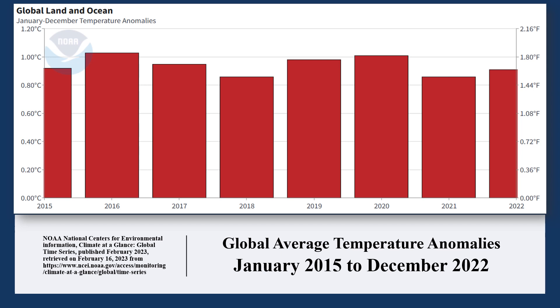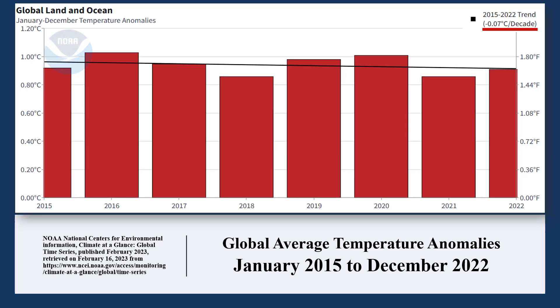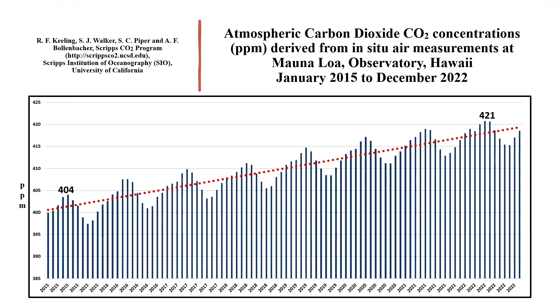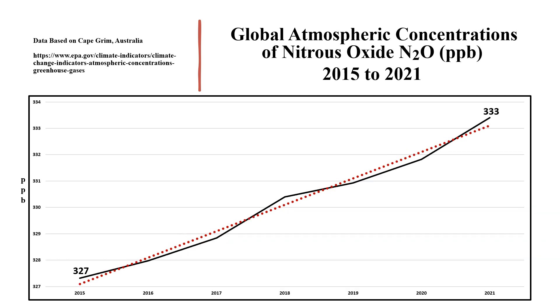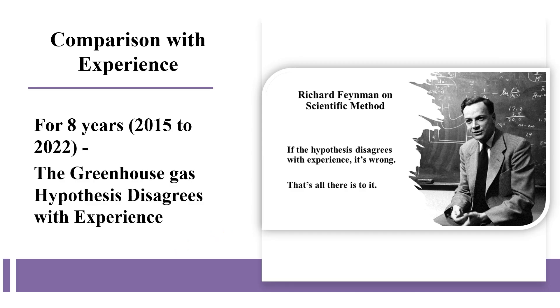For the period 2015 to 2022, the most recent and current trend: over the past eight years, global temperature has been on a cooling trend of minus 0.07 degrees Celsius per decade. But carbon dioxide concentration has increased by 17 parts per million, methane concentration has increased by 46 parts per billion, and nitrous oxide concentration has increased by 6 parts per billion. For the most recent eight years, the greenhouse gas hypothesis disagrees with experience.